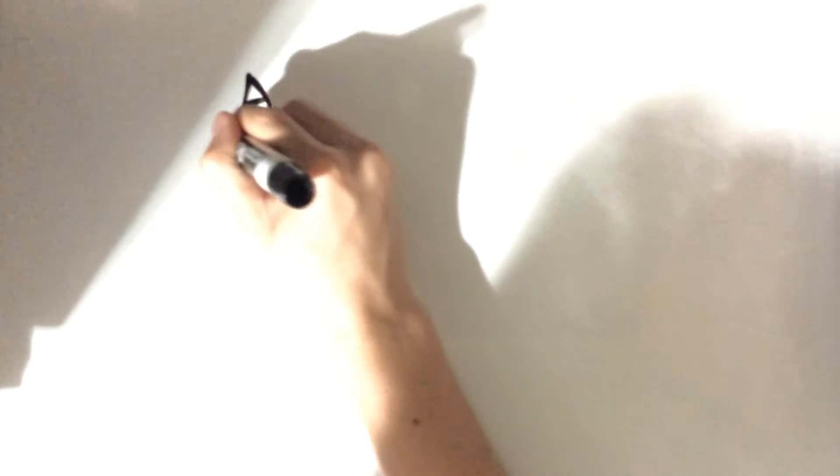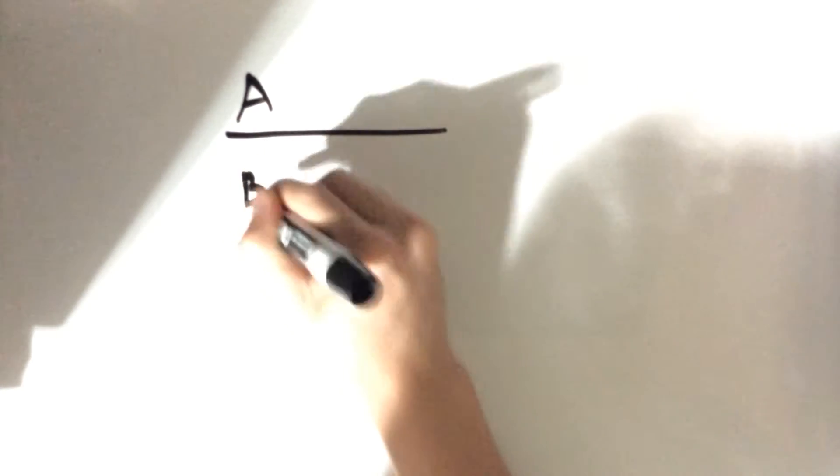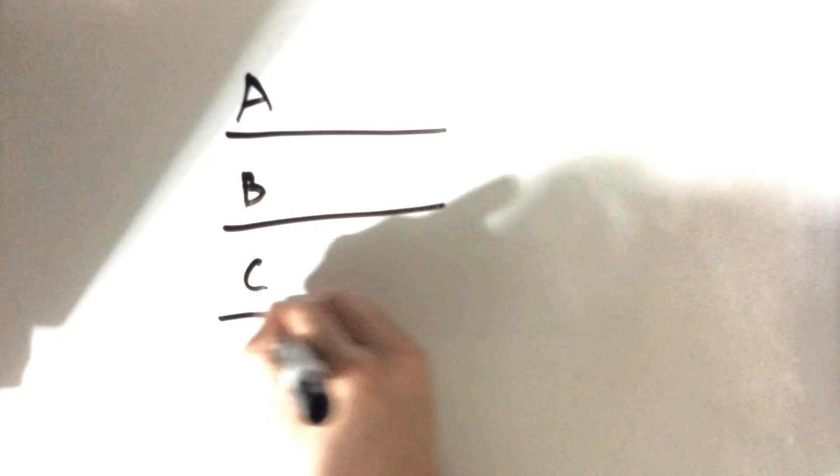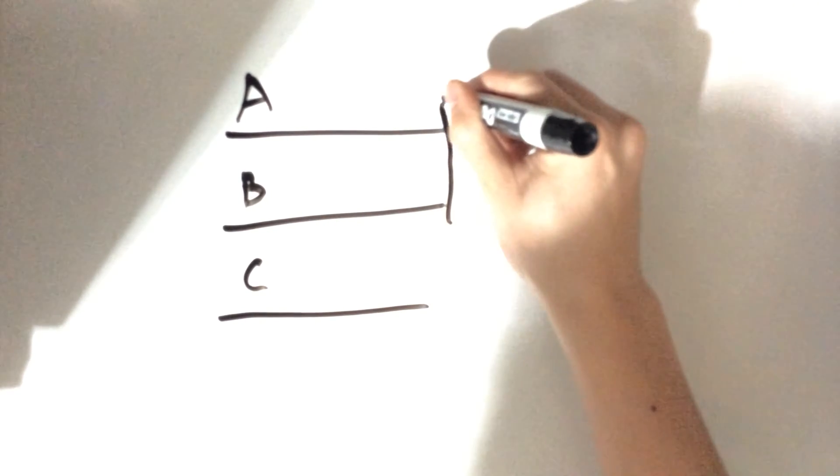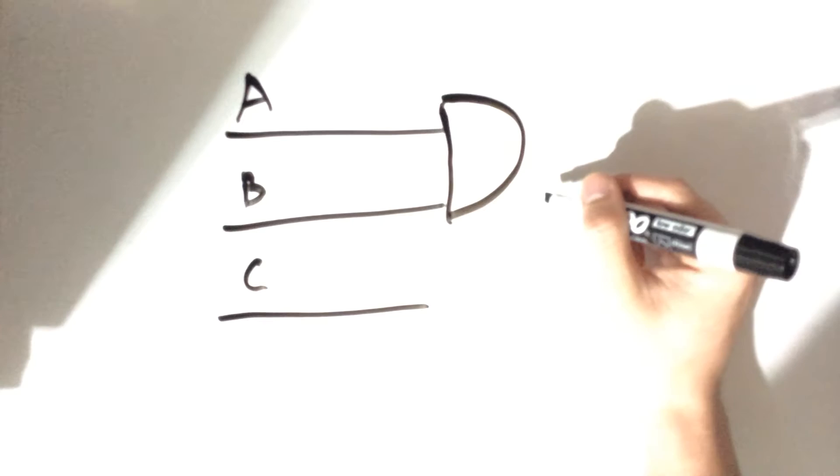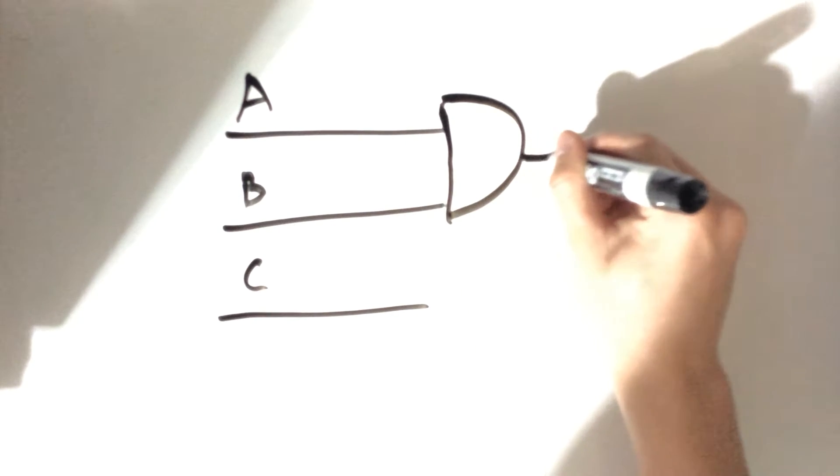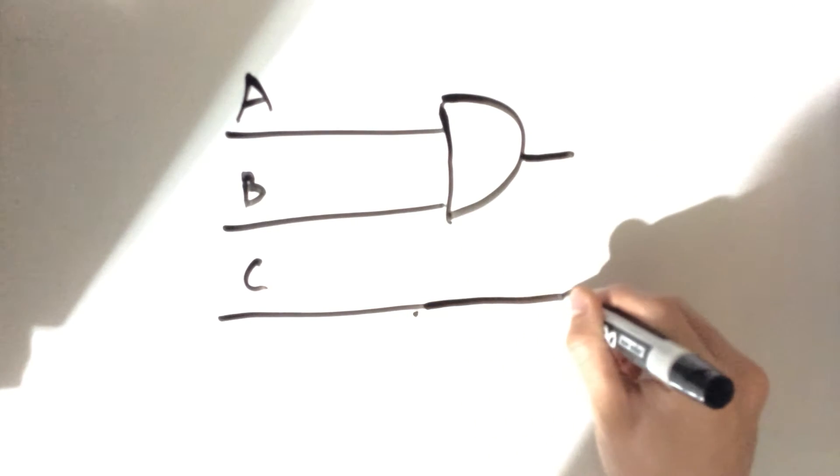I want to start off with an example here. For instance, if we had the following: A, B, and perhaps C. These two went through an AND gate.